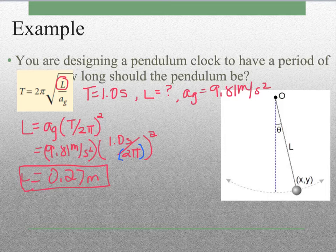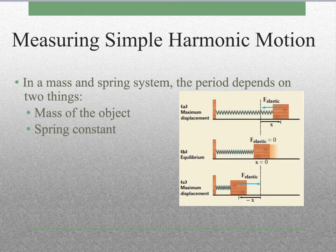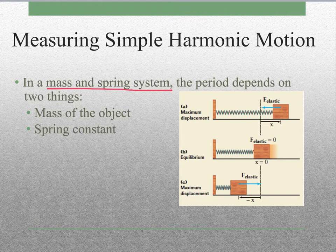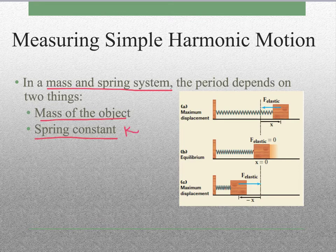Now that we've looked at finding the length of a pendulum, we're going to look at our other system. We are now going to look at it for a mass and spring system. In a mass and spring system, this time it does depend on the mass of the object, and it depends on our spring constant, k.